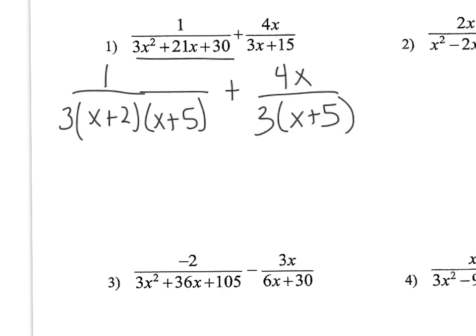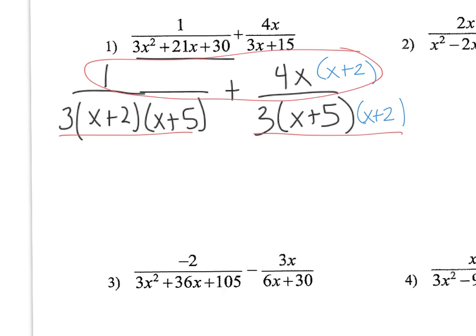So I need an x plus 2 right here, so I'm going to multiply the top by x plus 2 and the bottom by x plus 2. You have to make sure you multiply the numerator and the denominator by the same thing, because then you're not changing the value of the fraction — you're multiplying it technically by 1. So now that I have a common denominator, I can add my numerators.